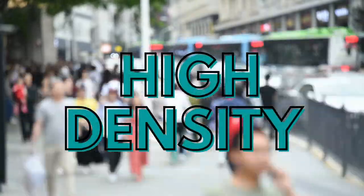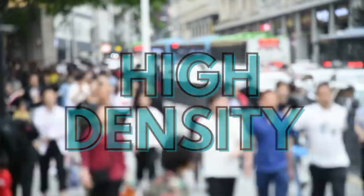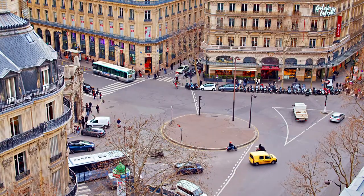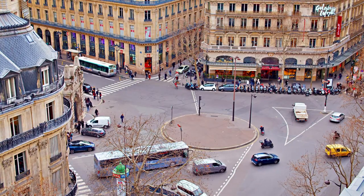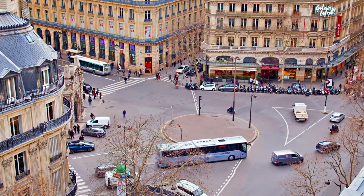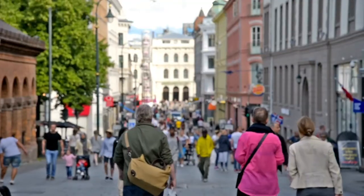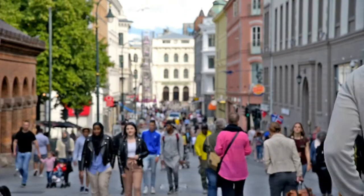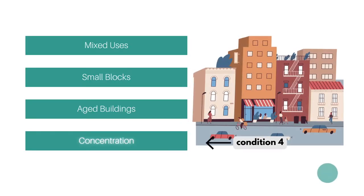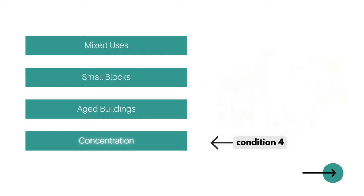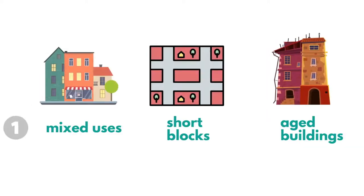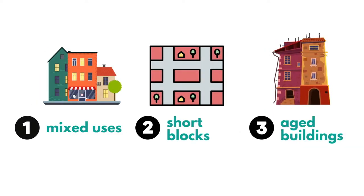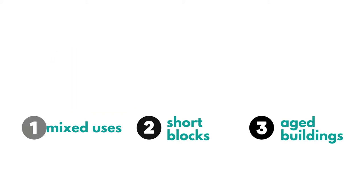Is high density the answer to successful urban districts? Obviously I much prefer urban life, but I understand that suburban life might be for some people, so I want to preface this video by saying that this is not a debate between urban and suburban. But assuming that we want to create the best urban areas, we can move on to Jane Jacobs' fourth and final condition. To recap, we've gone over her previous conditions: the need for mixed uses, short blocks, and aged buildings.